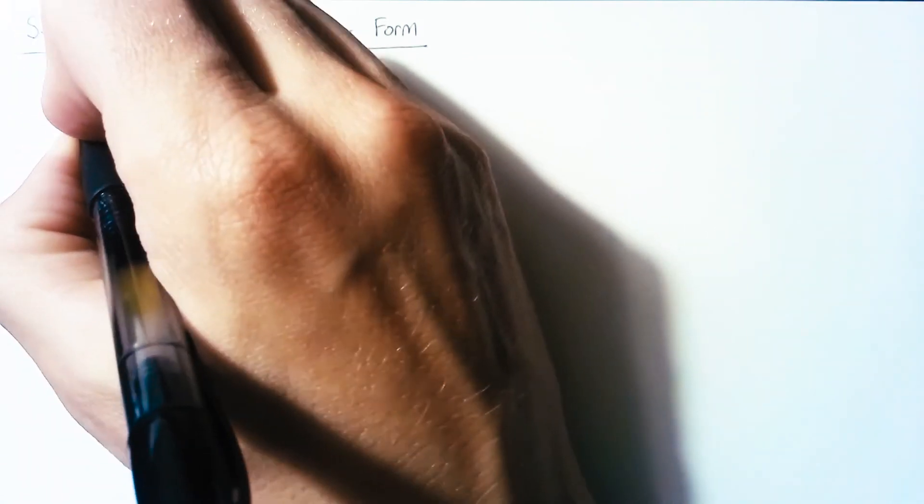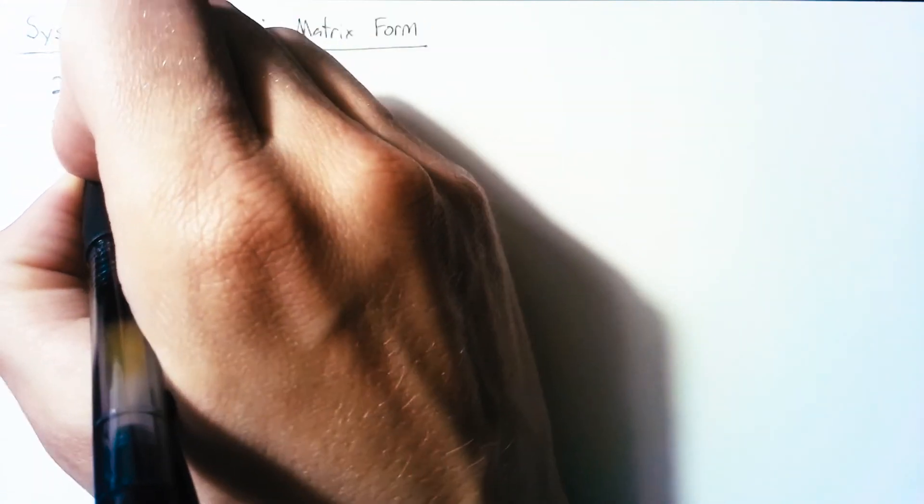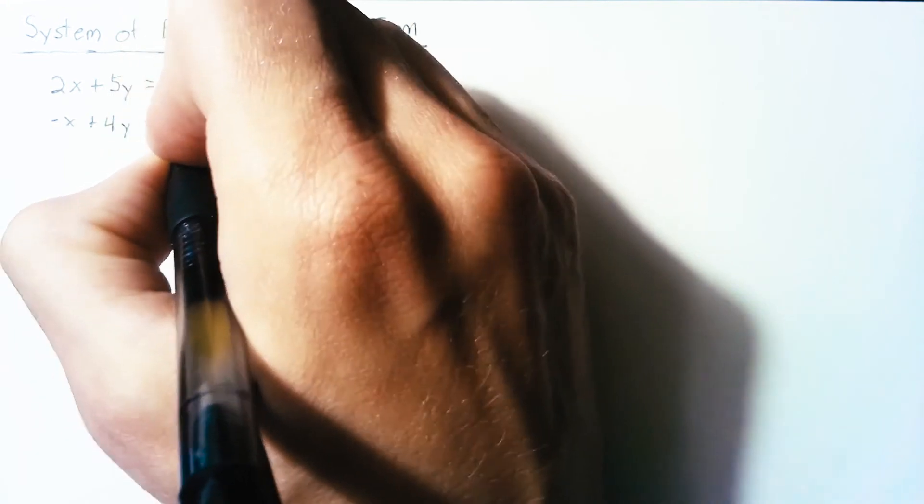At this point, hopefully you've all seen system of equations before. Typically what's going on here is we have some number of equations which have an equal number of variables.